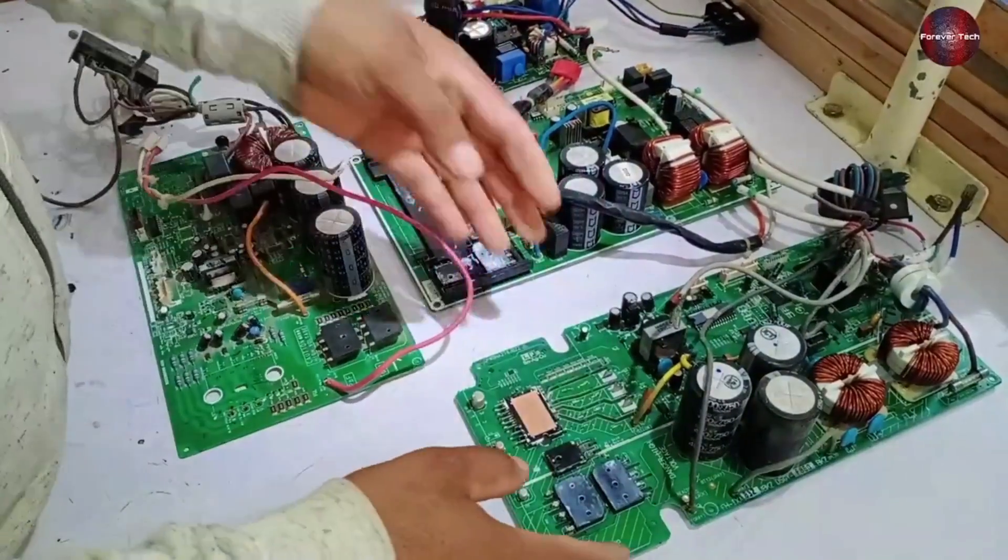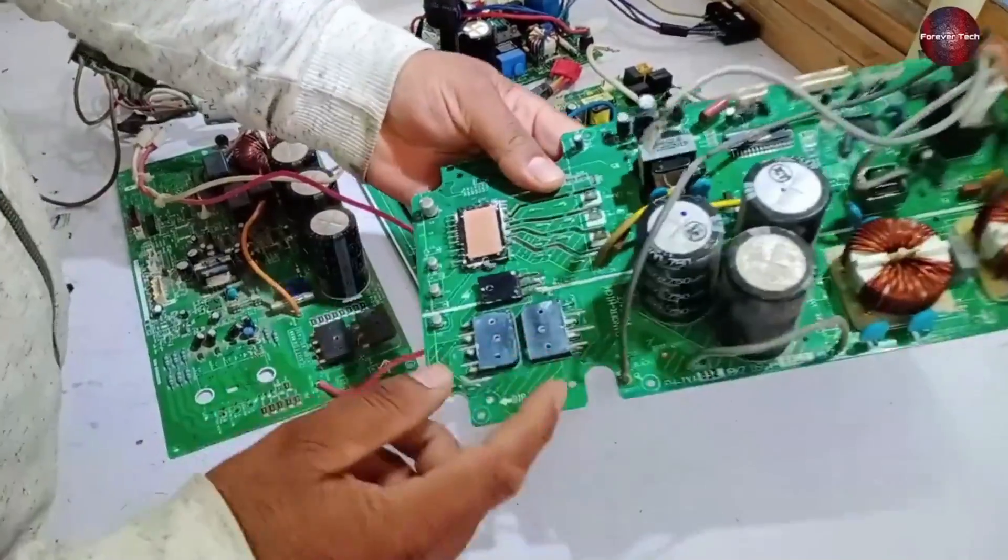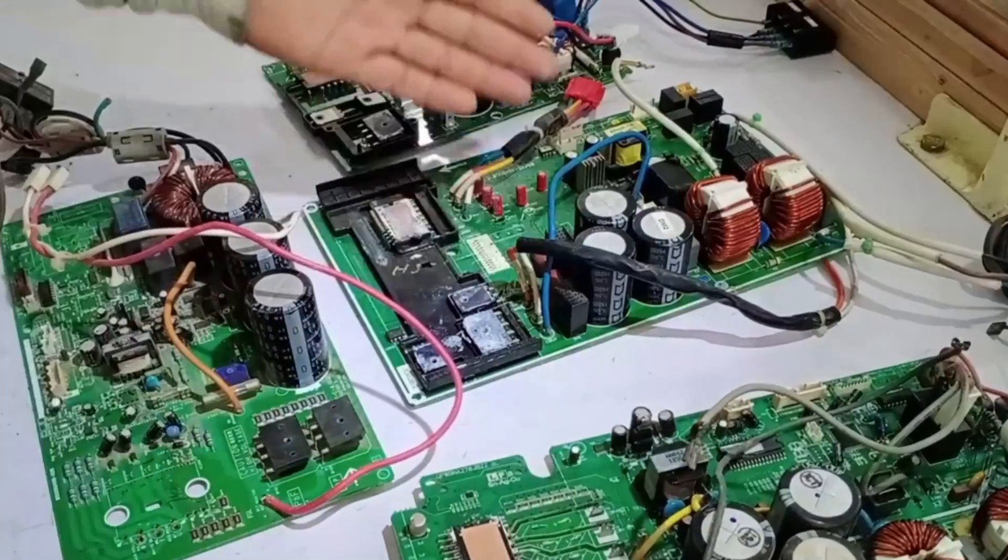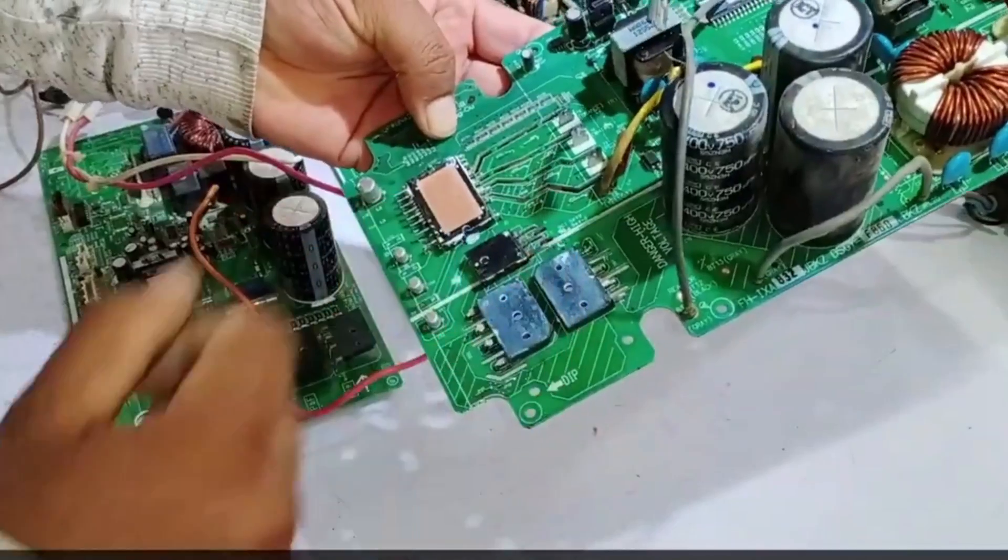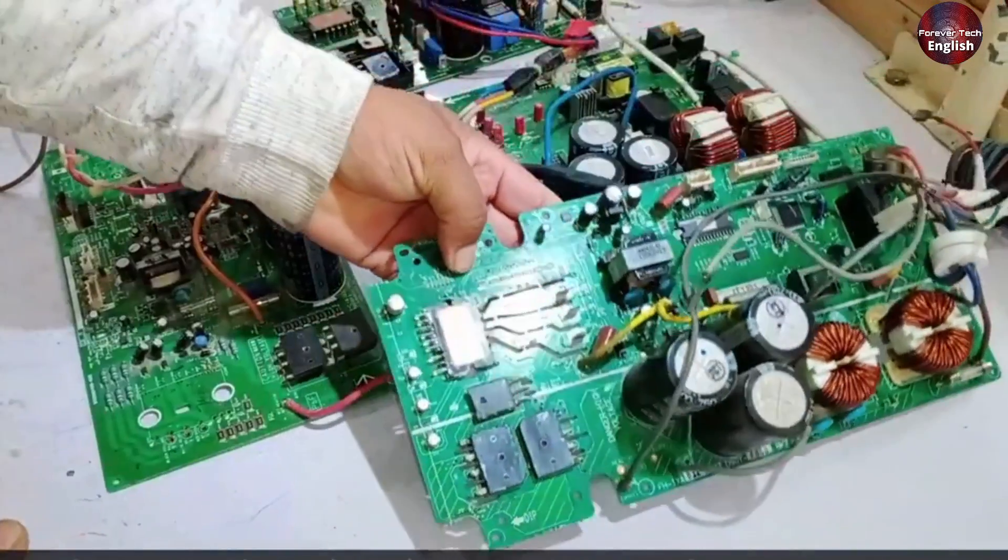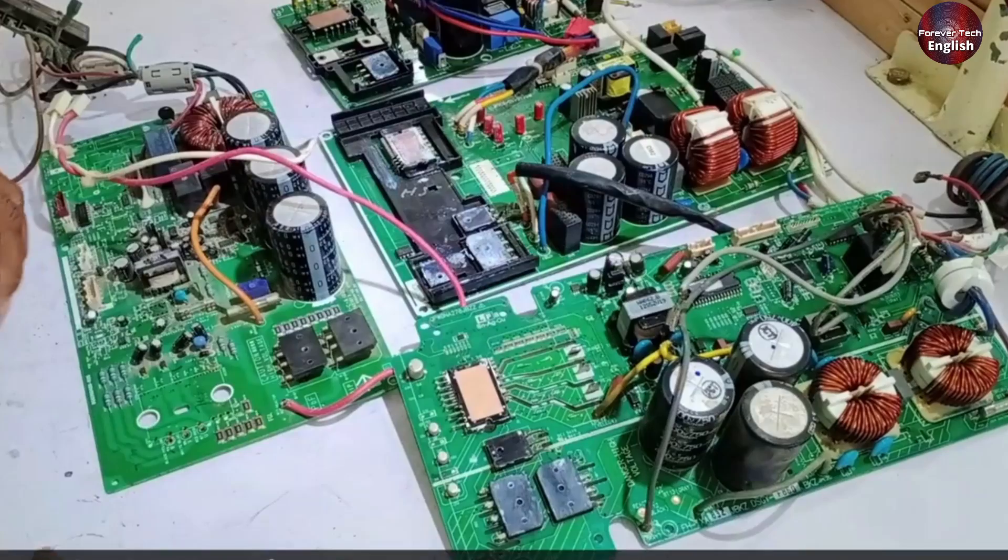For example, this is from Sharp, and they use double rectification. And this is from Ogeneral, this one is from Gree, and this one is from Ox. So why are two bridge rectifiers used? Today I will give you full information about this.